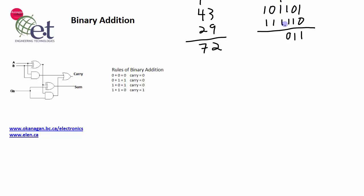Then we have 1 plus 1 plus 1, which is 3, or 11. Again, cannot be held in a single column, so we have the 1 here and we carry the other 1 over into the next column. 1 plus 0 plus 1 is 10, 0 here, 1 into the next column.